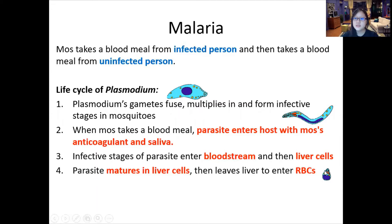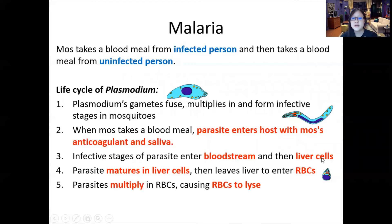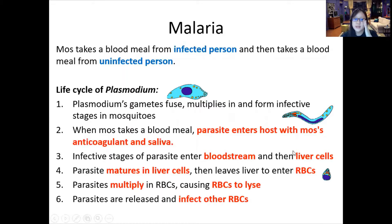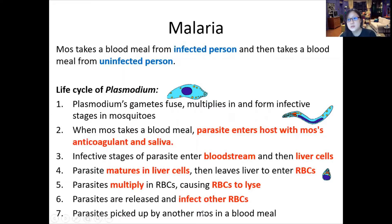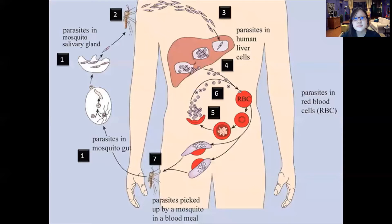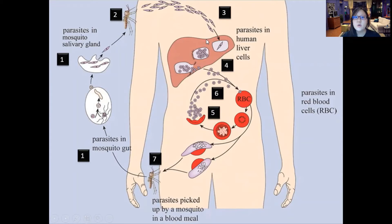It matures in the liver and then leaves to enter the red blood cells. The parasites multiply in the red blood cells, causing the red blood cells to lyse. Once lysed, more parasites are released to infect other red blood cells, and then it's picked up by another mosquito in a blood meal to be passed on to another person. The key pathway to remember is: bloodstream → liver → red blood cells.